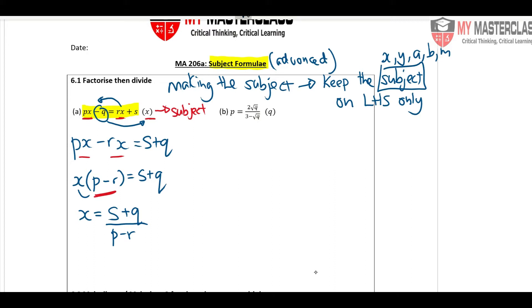So the first thing about the subject is we always try to make it linear. What does linear mean? One straight line. So this is one group, you cross multiply, so P bracket 3 minus square root Q is equal to 2 square root Q.